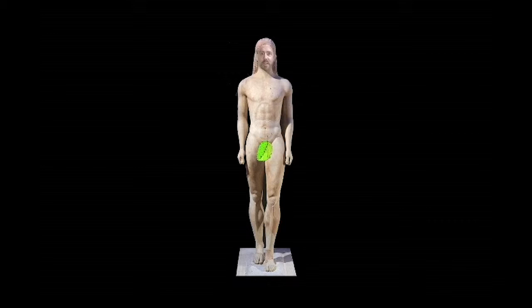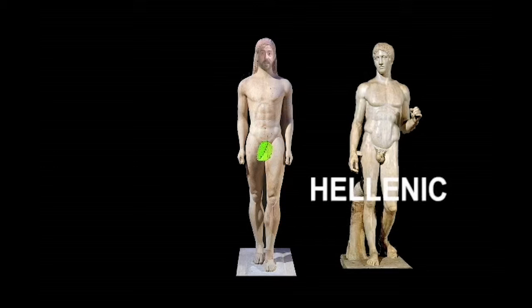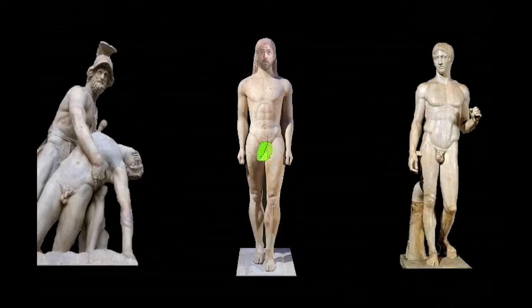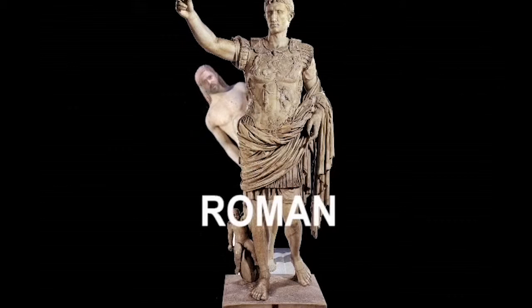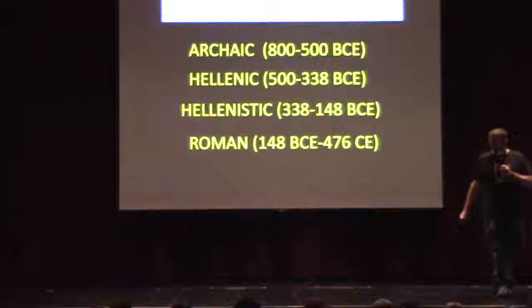Today we're going to be looking at art from four different eras. Art reflects history — you can learn about what people thought and believed by looking at their art. We have a statue from the Archaic Age, the Hellenic Age, the Hellenistic Age, and the Roman Empire. We'll be looking at each of these four ages individually. Those four ages of art are divided in a chart on your sheet. It begins with the Archaic Age, then the Hellenic Age, then the Hellenistic, and then the Roman period.